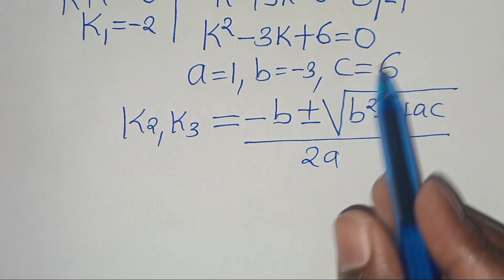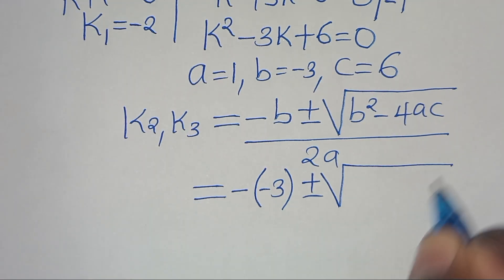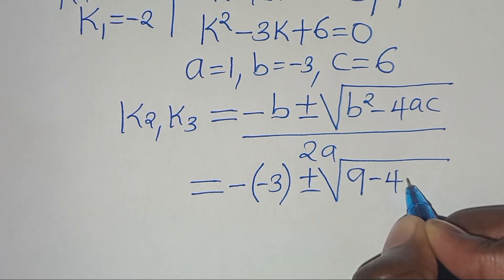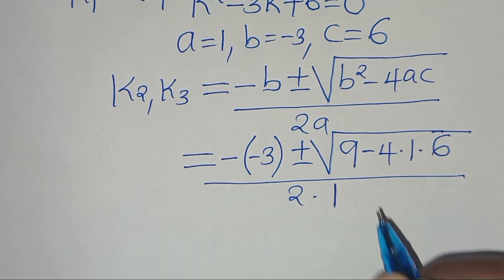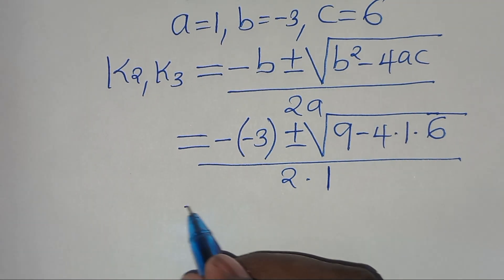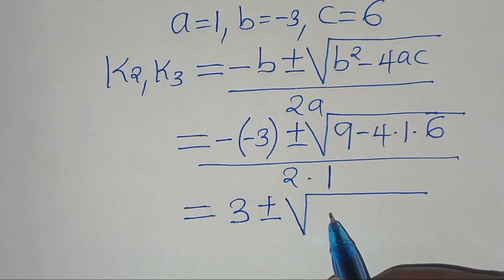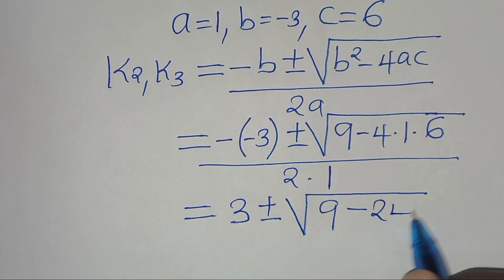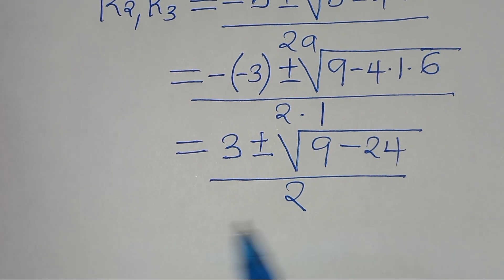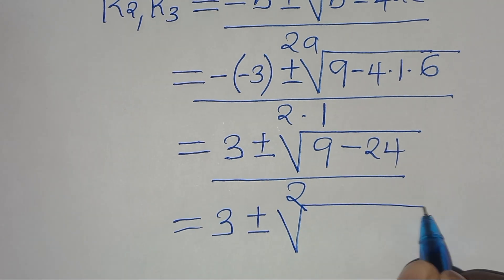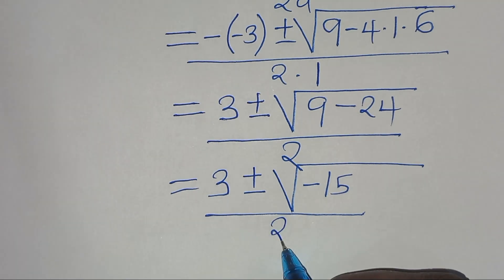Substituting the values: k = (3 ± √(9 − 4 × 1 × 6)) / 2, which gives k = (3 ± √(9 − 24)) / 2, and then k = (3 ± √(−15)) / 2.